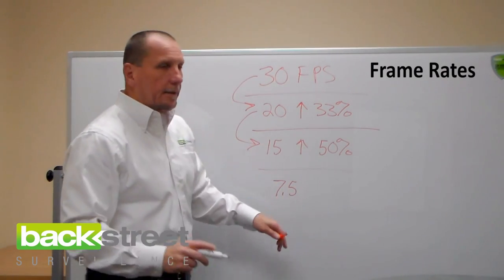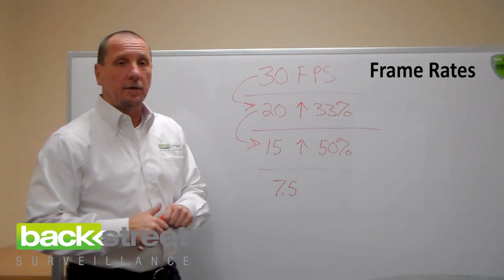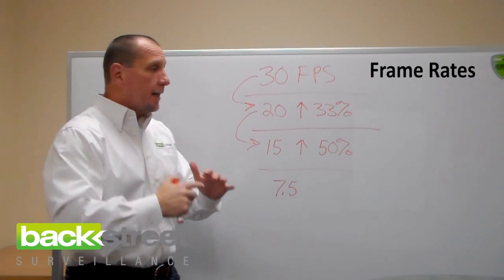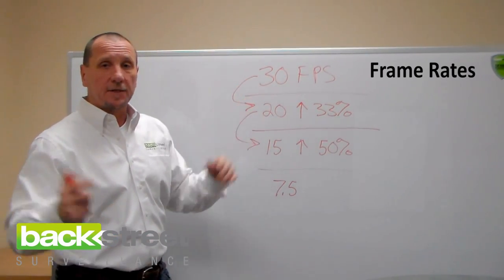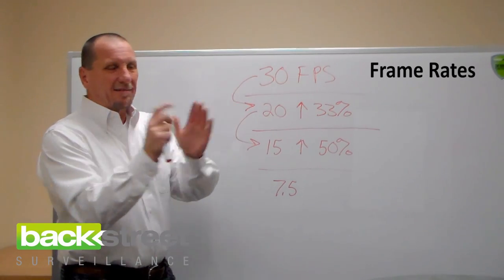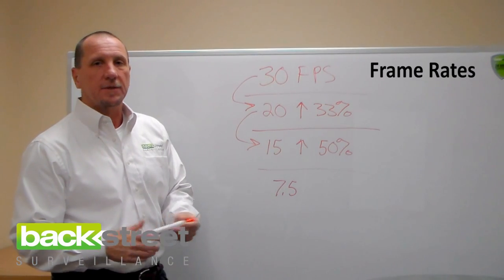And the reason those systems did that is their processors just couldn't handle processing clarity and 30 frames or 20 frames or 15 frames a second. So you got the best clarity they could generate, but they had to drop it down to 7.5 frames a second.